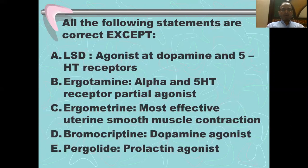The next question: all the following statements are correct except. This learning objective is based upon the mechanism of action of the ergot alkaloids and especially their actions on the tissues and receptors. The first statement: LSD, lysergic acid diethylamide, is an agonist of dopamine and 5-HT receptors. This statement is correct — it is the reason why it causes hallucinations, relating to the dopamine and serotonin theory of psychosis.